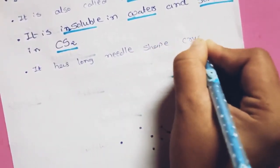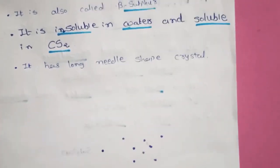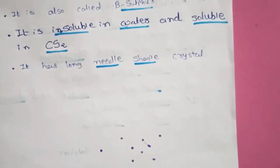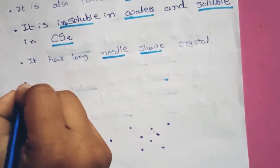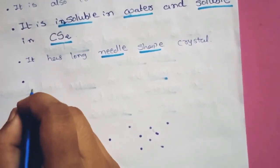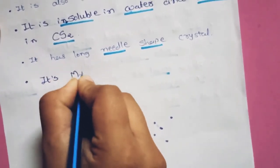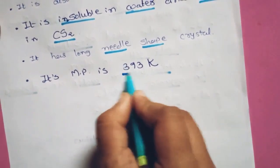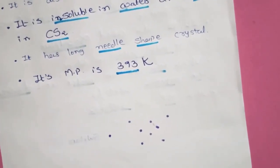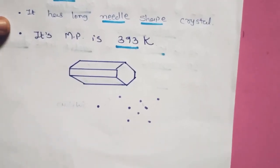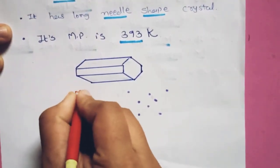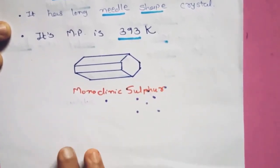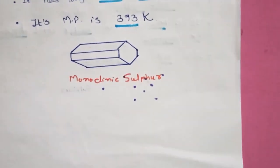Monoclinic sulfur has a long needle-shaped crystal structure. So while rhombic sulfur had a crown-like crystal, monoclinic sulfur appears needle-like. Its melting point is 393 Kelvin. You can see the needle-type structure where sulfur atoms are present at the corners.